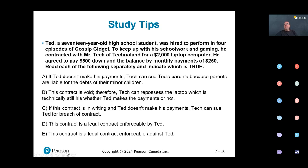Let's read the practice question together. Ted is a minor who was hired — so it's an employment — to perform. To keep up with his schoolwork and gaming, he contracted with Mr. Tech of Technoland, a company, for a $2,000 laptop. He agreed to pay $500 now and the balance by monthly payments of $250.